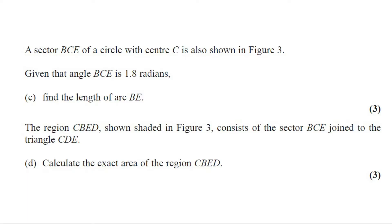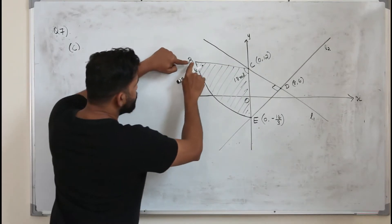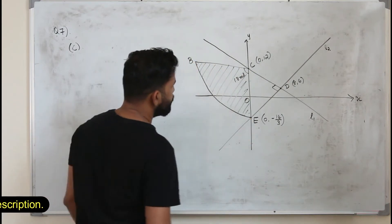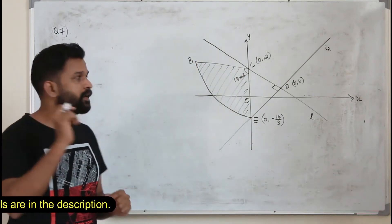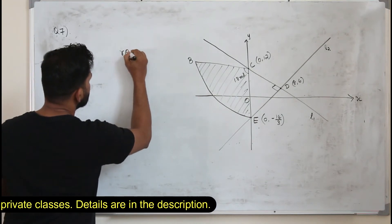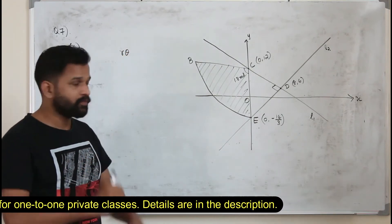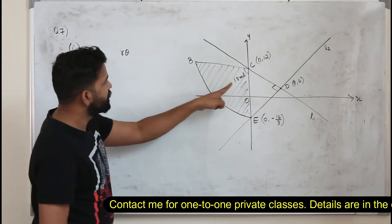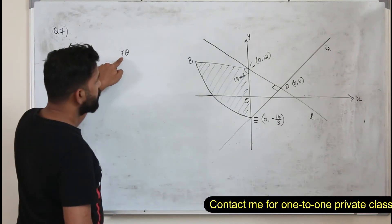A sector BCE of a circle with centre C is also shown in the figure. Given that angle BCE is 1.8 radians, Part C: find the length of arc BE. This question carries three marks. To find the arc length of this sector, the formula is arc length equals R times theta. The radius is BC or CE, and theta is given in radians.